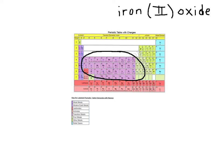So something like iron, which you can see right here on your periodic table, could be +2 or it could be +3. It depends.